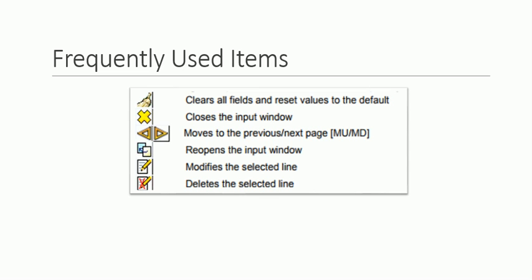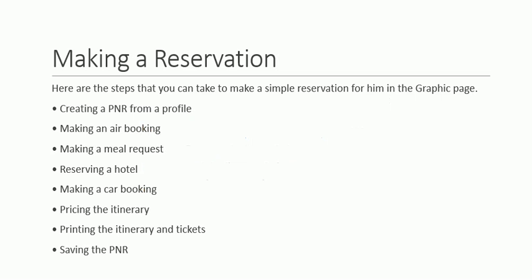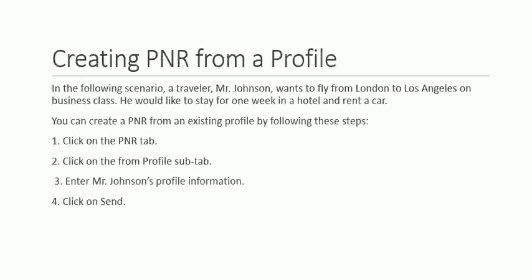Now we will talk about making a reservation on the Amadeus system. The basic steps are: first create a PNR from your profile, then make an air booking, make a meal request, reserve a hotel, make a car booking, price the itinerary, print the itinerary and tickets, and then save the PNR. All these steps are done from the main graphic page, and you can skip items not required — for example, if you only need to make an air booking.